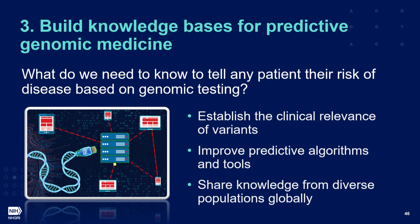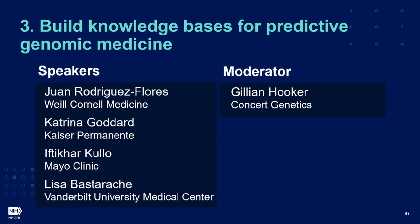A counterpart to these knowledge bases would be improving or developing new algorithms or tools for interpreting variants identified in a patient, and for predicting risk for that individual. And lastly, thinking about worldwide networks for generating and sharing knowledge from diverse populations, so these knowledge bases are better representative for all people and not just one subset of the population. We have speakers Juan Rodriguez-Flores, Katrina Goddard, Iftikar Kulu, Lisa Basterash, and moderator Jillian Hooker.